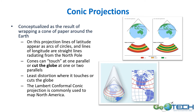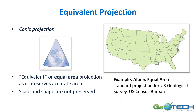The Lambert Conformal Conic projection is commonly used to map North America, and the illustration on the right gives you the shape of the continent you often see. For equivalent conic projections, you can identify this one because it has that curved upper boundary of the United States. It's an equal area projection that preserves area accurately, though scale and shape are not necessarily preserved. On the right we have the Albers Equal Area projection.